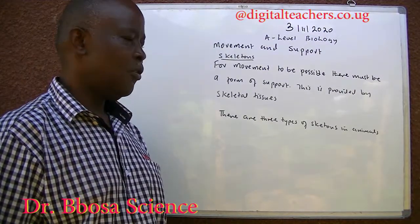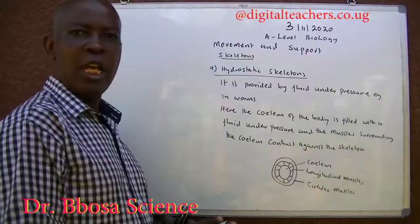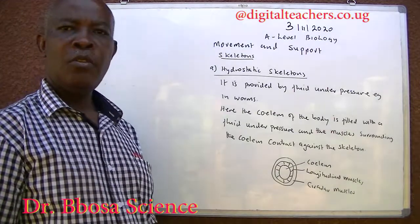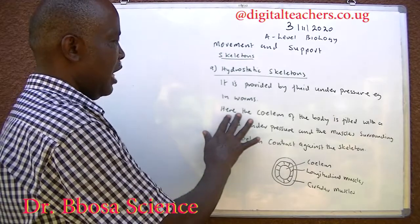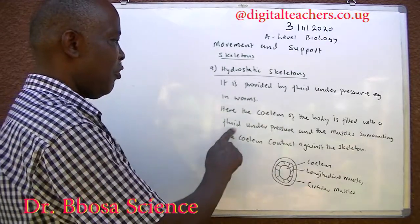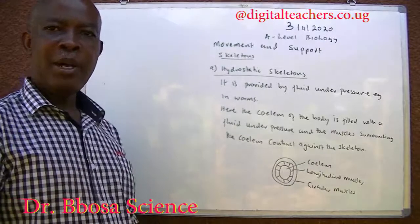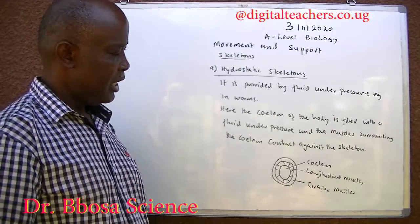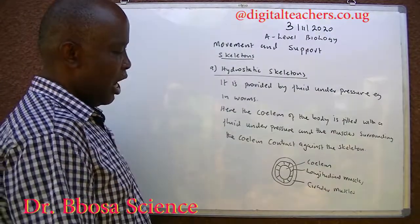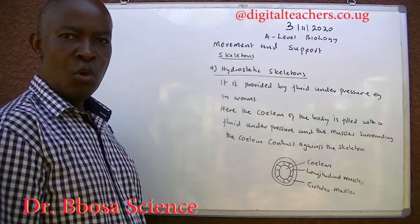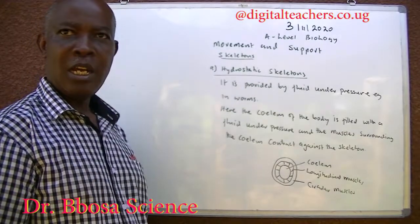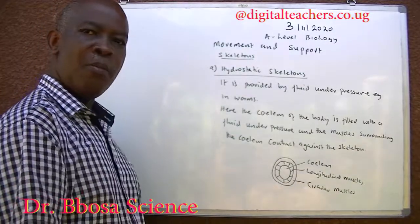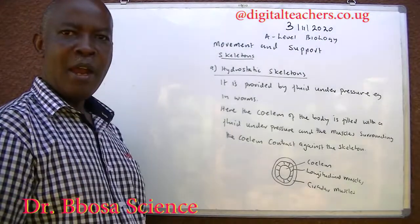There are three types of skeletons in animals. A: hydrostatic skeleton. It is provided by fluid under pressure, for example in worms. Here, the coelom of the body is filled with a fluid under pressure, and the muscles surrounding the coelom contract against the skeleton. In earthworm, for example, we have a coelom filled with a fluid, in this case water, surrounded by a system of longitudinal muscles and circular muscles.